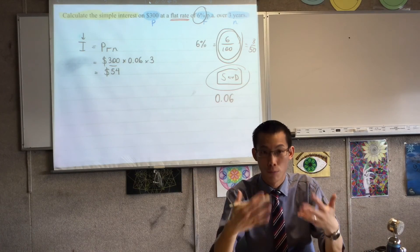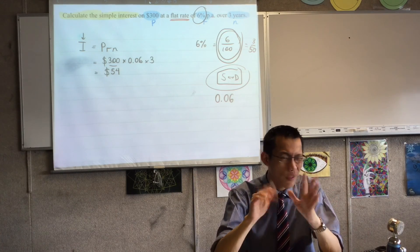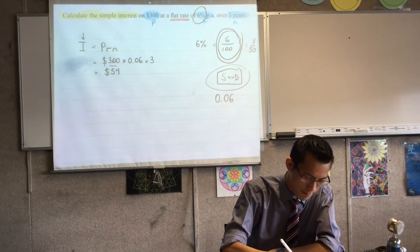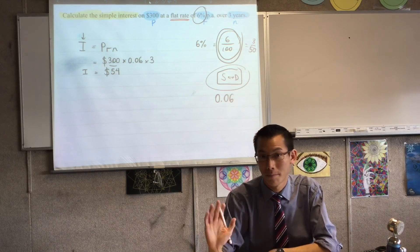So if the question was calculate the total value, it would be $300 and the $54 that you've just sort of accrued as interest. But right now, all they want is the simple interest, so I've done I equals $54. Simple stuff.